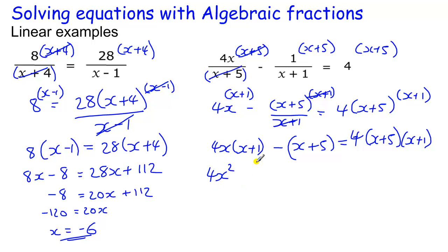So 4x times x is 4x squared, 4x times 1 is 4x, take away x, take away 5, equals 4 times x, so actually we'll multiply out this double bracket first.